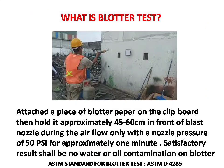Next question: what is the blotter test? Answer is: attach a piece of blotter paper on a clipboard, then hold it approximately 45 to 60 centimeters in front of the blast nozzle during airflow only, with a nozzle pressure of 50 psi, for approximately one minute. A satisfactory result shall be no water or oil contamination on the blotter.